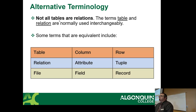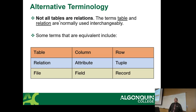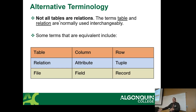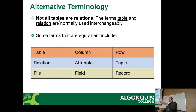A relationship is the connection between entities — for example, the connection from a professor to their section, from students to the section, and from the course and term to the section. The combination of all those connections is the relationship.